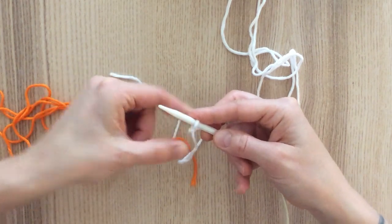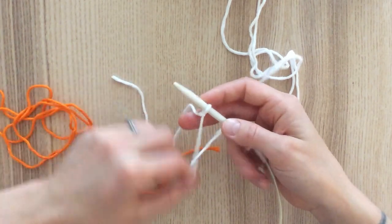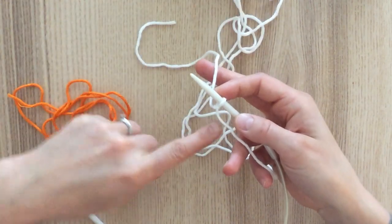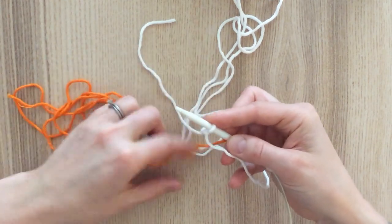You don't probably want it super tight, about like that is fine. Okay, so then you simply make a little space here between the tail going to your ball and the scrap tail.